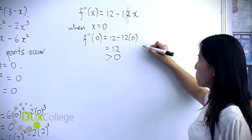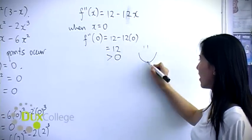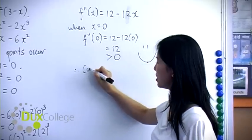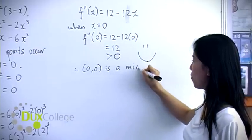since it's positive, you will smile, then you will have a minimum point. So therefore, (0,0) is a minimum point.